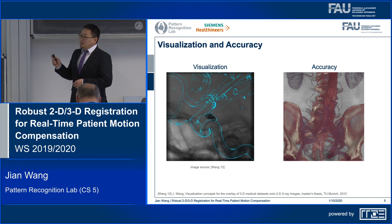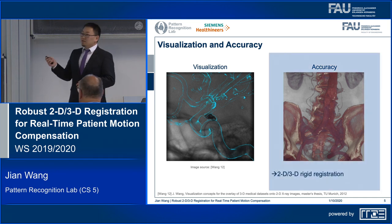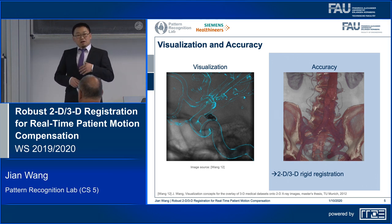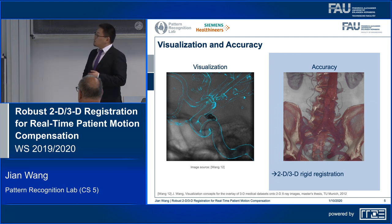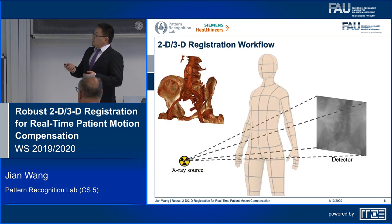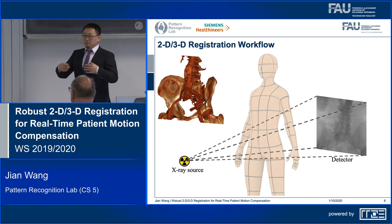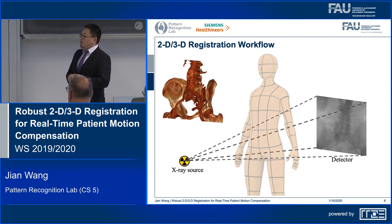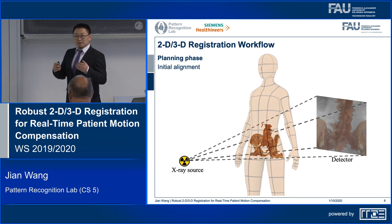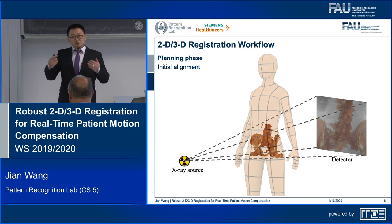This leads to the topic of image registration. In this talk, I'm going to focus on 2D-3D registration, namely by applying 3D rotation translations to the 3D image such that both the 3D image and 2D image are accurately aligned. This registration workflow consists basically two parts. Before the interventional procedure starts, the 3D volume has to be brought into the projection geometry according to the patient position, and this is done by an initial registration.